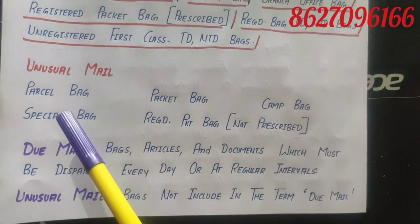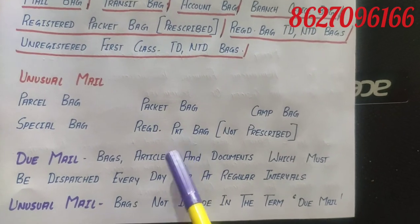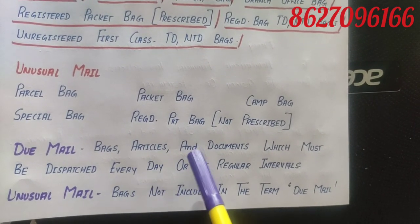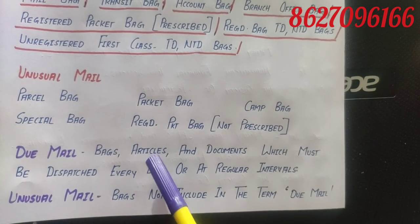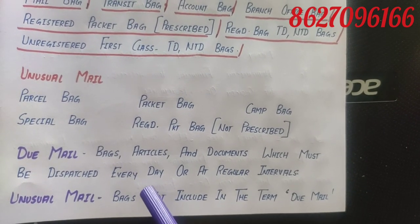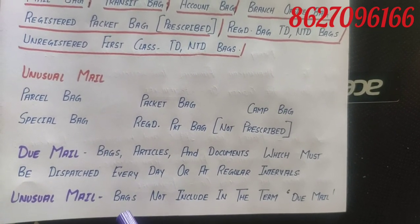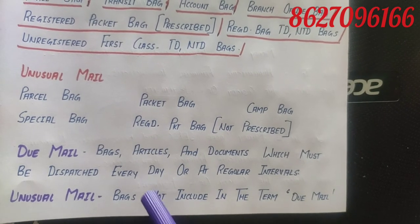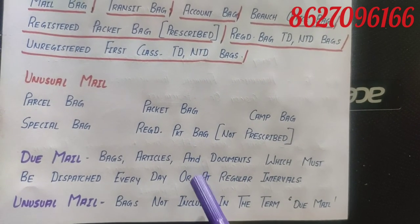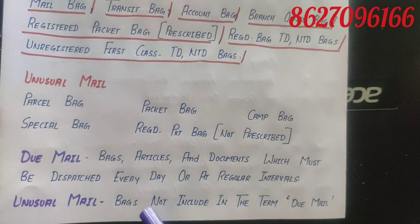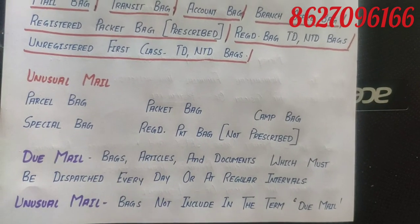Unusual mails include parcel bag, packet bag, camp bag, special bag, and registered packet bag (not prescribed). Due mails are bags, articles and documents which must be dispatched every day or at regular intervals. Unusual mails are bags not included in the term due mail — those that are not fixed or regular, such as a special bag that goes occasionally.